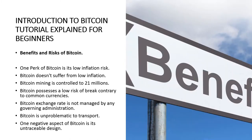Benefits and risks of Bitcoin. One of the perks of Bitcoin is its low inflation risk. Common currency suffers from inflation and tends to lose purchasing power each year as governments use quantitative easing to stimulate the economy. Bitcoin doesn't suffer from low inflation as Bitcoin mining is limited to just 21 million units. That results in the release of new Bitcoin scaling down, and the entire amount will be mined out within the next couple of decades.